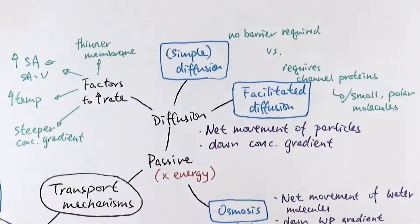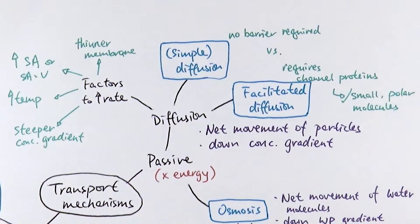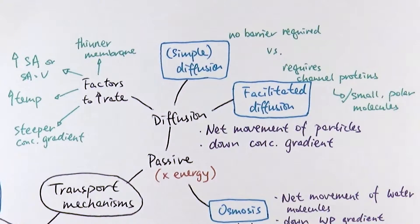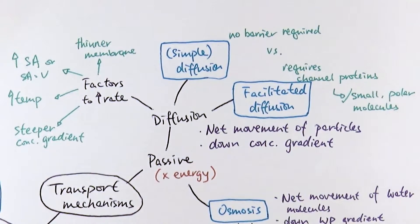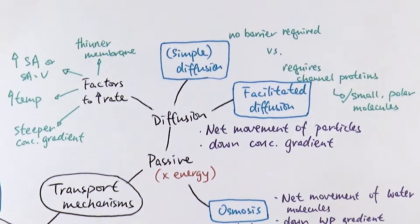Let's look at diffusion. Even within diffusion, you can separate it into simple diffusion or facilitated diffusion. When we simply say diffusion, we automatically assume simple diffusion. Generally speaking, diffusion is the net movement of particles down the concentration gradient. Net means overall, because particles obey Brownian motion — they have a completely random direction of movement — but most particles will travel from high concentration to low concentration until equilibrium is reached.